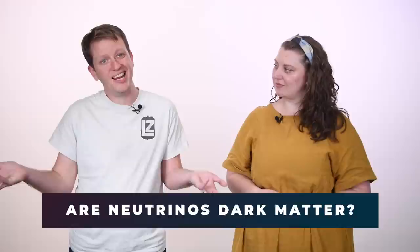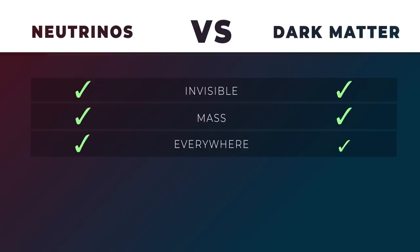Mostly no, but also a little yes. It's complicated. Like you said, the neutrinos we know from the standard model have a lot in common with dark matter. Both dark matter neutrinos are not visible in our telescopes, they both have some mass, they're both all throughout the universe, and they each existed early in the universe's history.